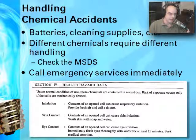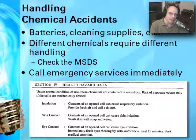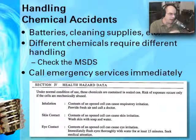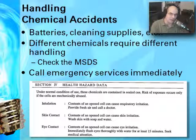Chemical accidents are handled differently. They can come from a battery or cleaning supply, and require different handling both for storage and in an emergency. An MSDS lists health hazard data for each substance — what to do if you inhale it, what to do if it gets on your skin, whether to wash it with water or not. Every hazardous material has a different set of instructions. Always refer back to the MSDS and call emergency services to get medical help immediately.